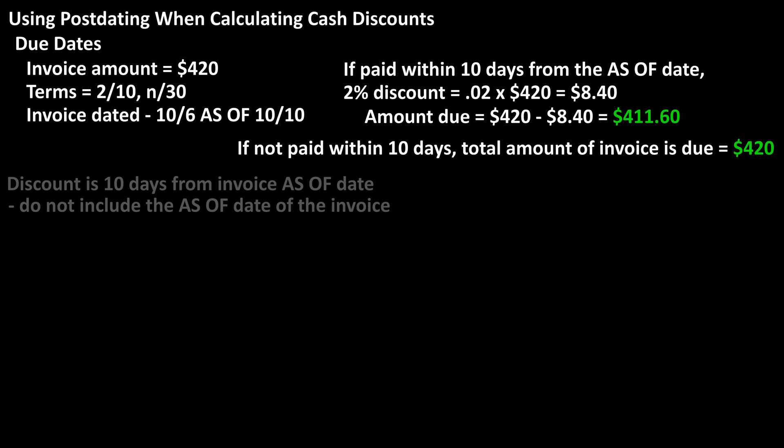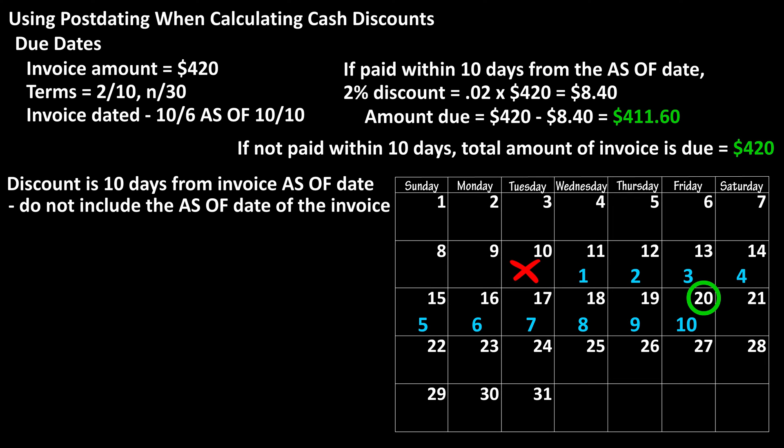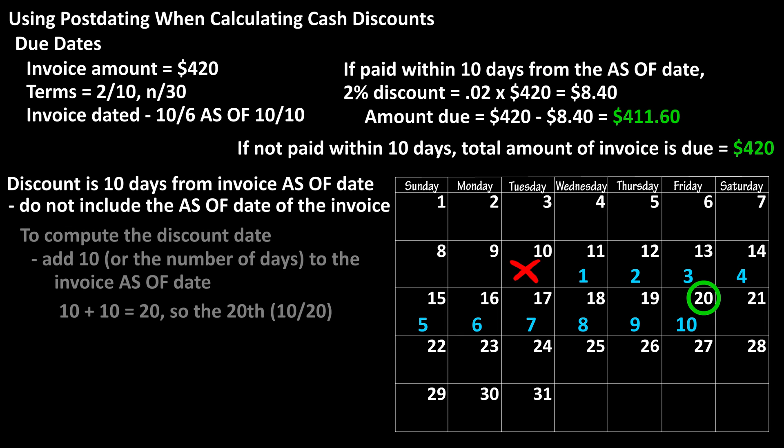For the date for the discount — 10 days from the as of date — we do not include the actual date of the post-date, the 10th. Here is a calendar counting the days from the post-date or as of date, which is the 20th. To compute this date, we just add 10 to the as of date, so 10 plus 10 equals 20, so the 20th.